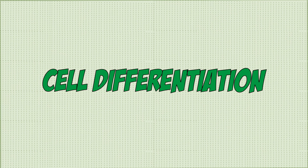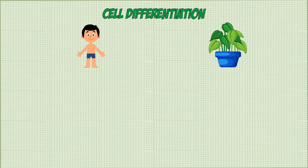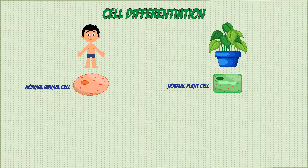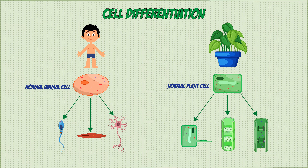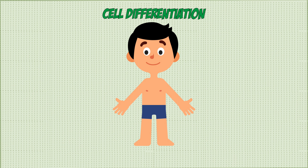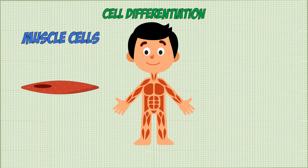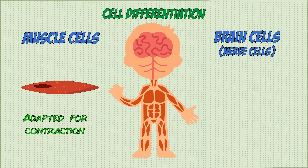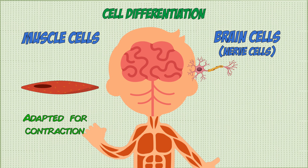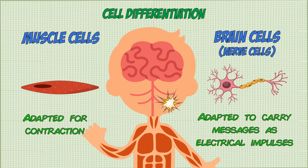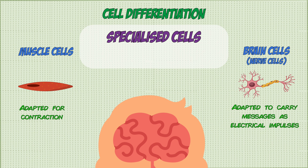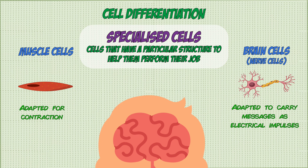Let's start off with cell differentiation. Organisms like animals and plants aren't made up of the same type of cell — they have cells of different types in different parts of the body, which are specialized for the function of that body part. For example, the cells in the muscles are adapted to help the muscles carry out their function, which is to contract, and the ones in the brain are designed to help carry messages. We call these specialized cells because they're adapted for their particular function.